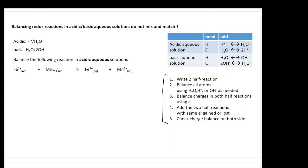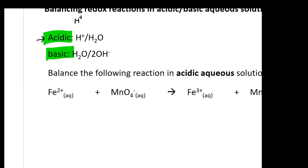In your questions, it will always tell you whether you are in an acidic or basic solution. The first thing is to identify which one you're in, because the species you add to balance the equation will be different. In acidic solution, you use H+ to add protons and H2O to add oxygen. In basic solution, you use H2O to add protons and 2OH- to add oxygen. These are the things you want to memorize.